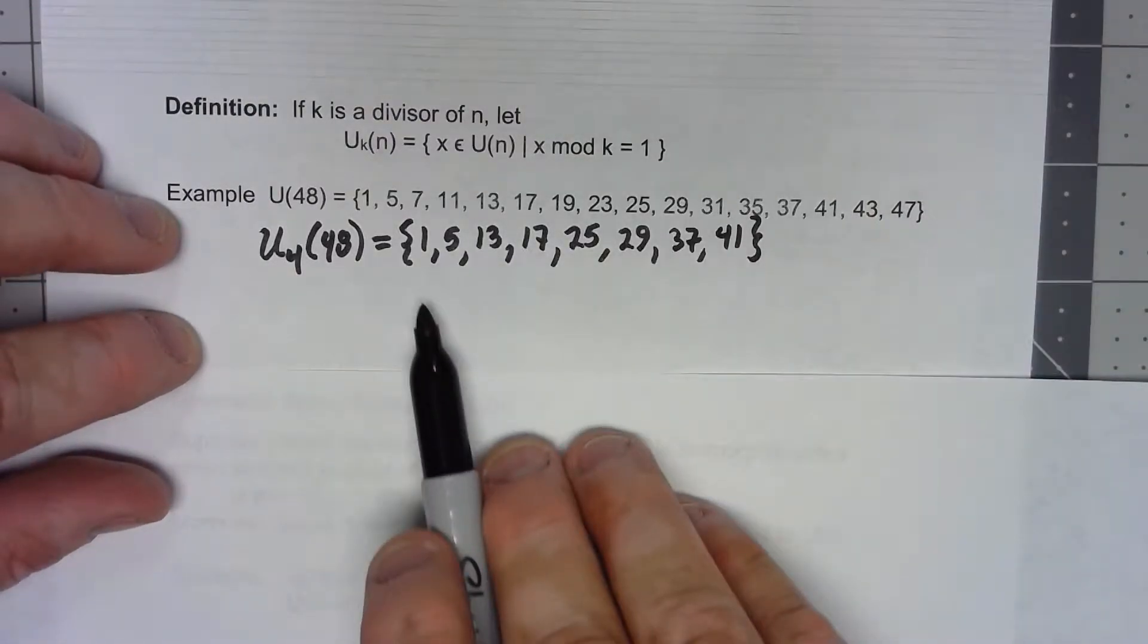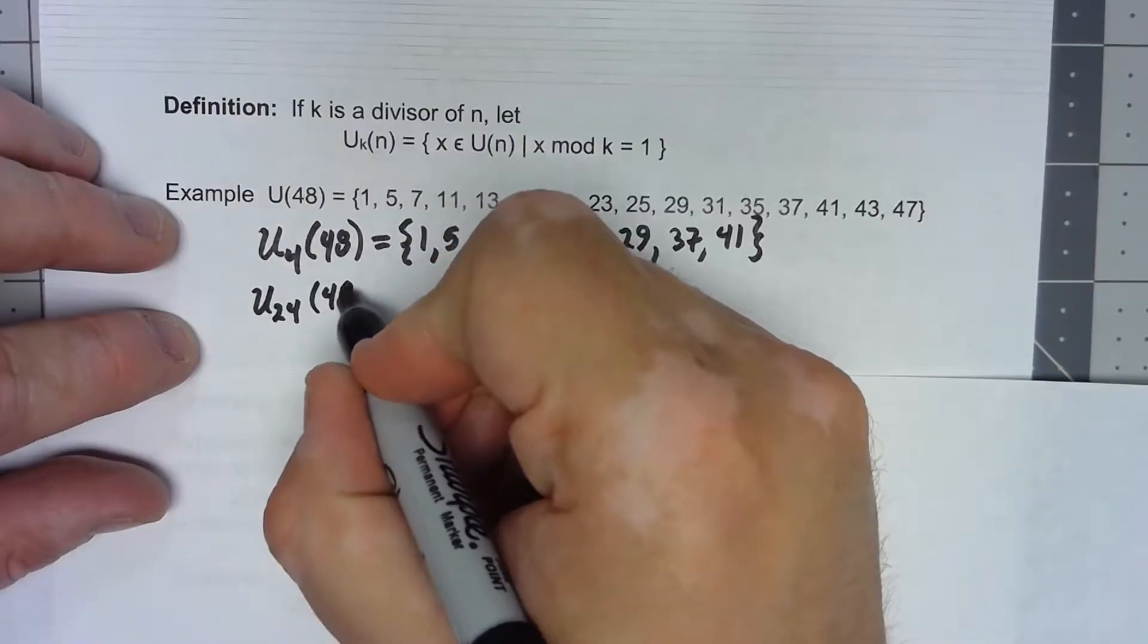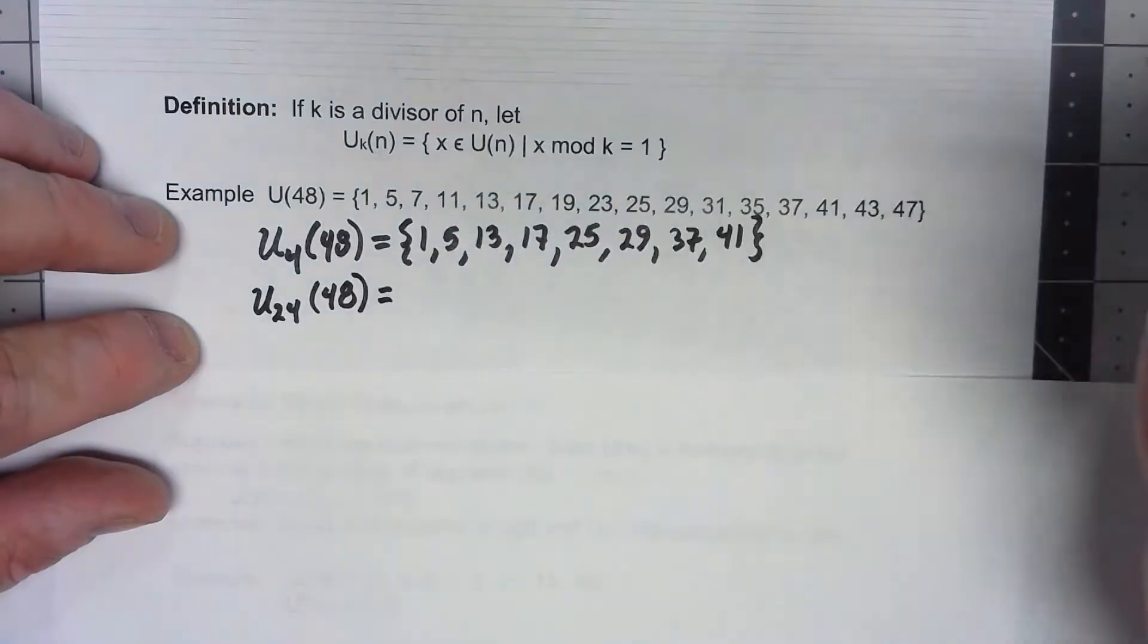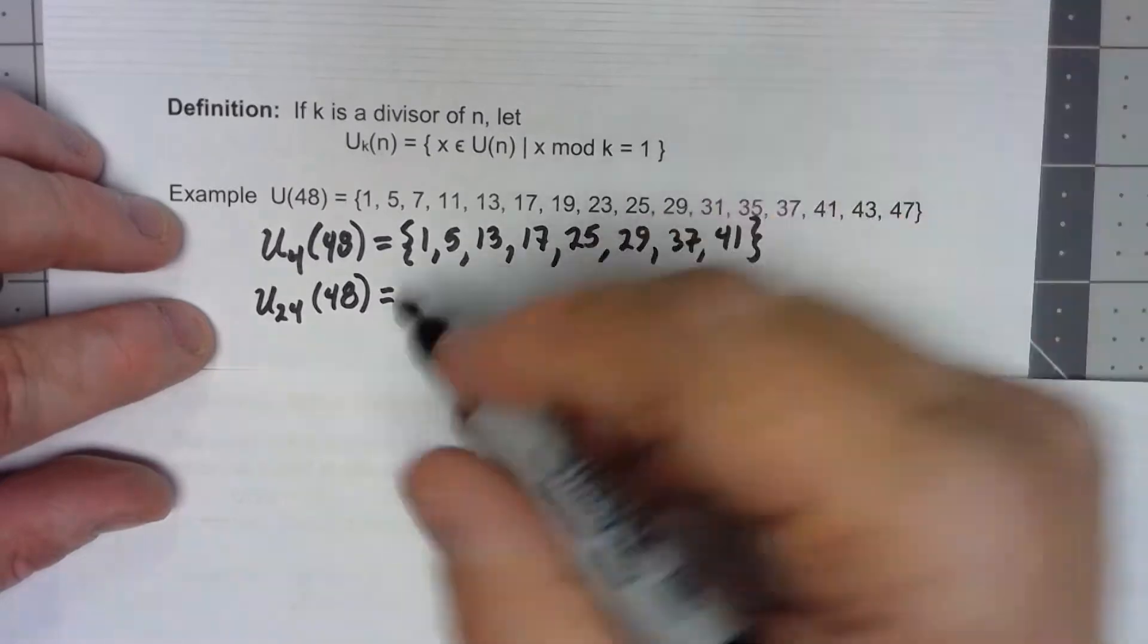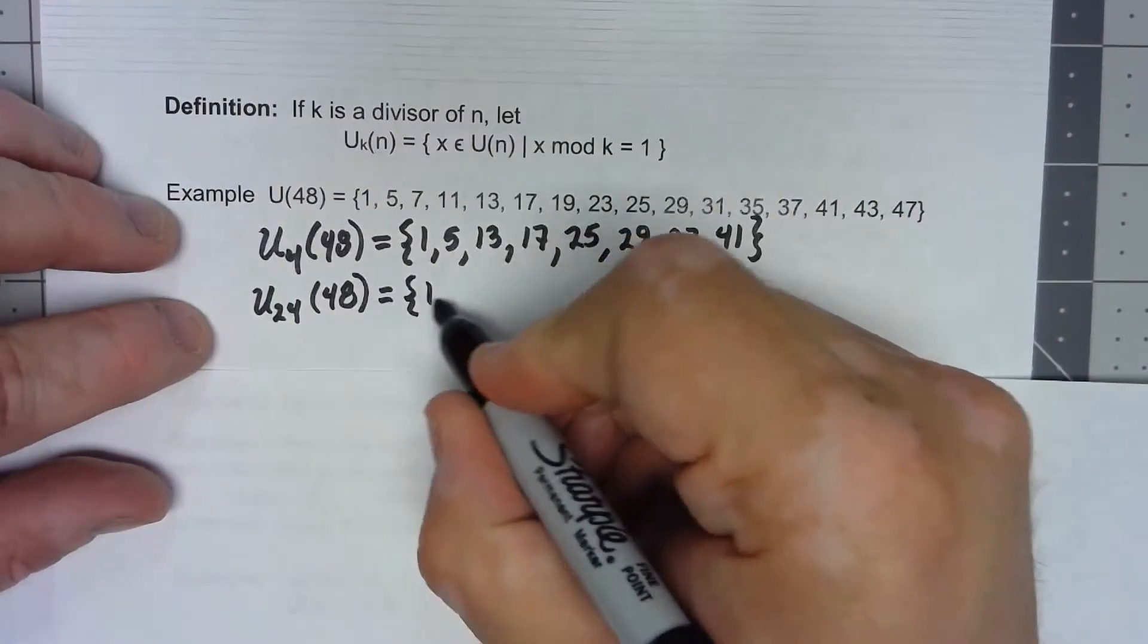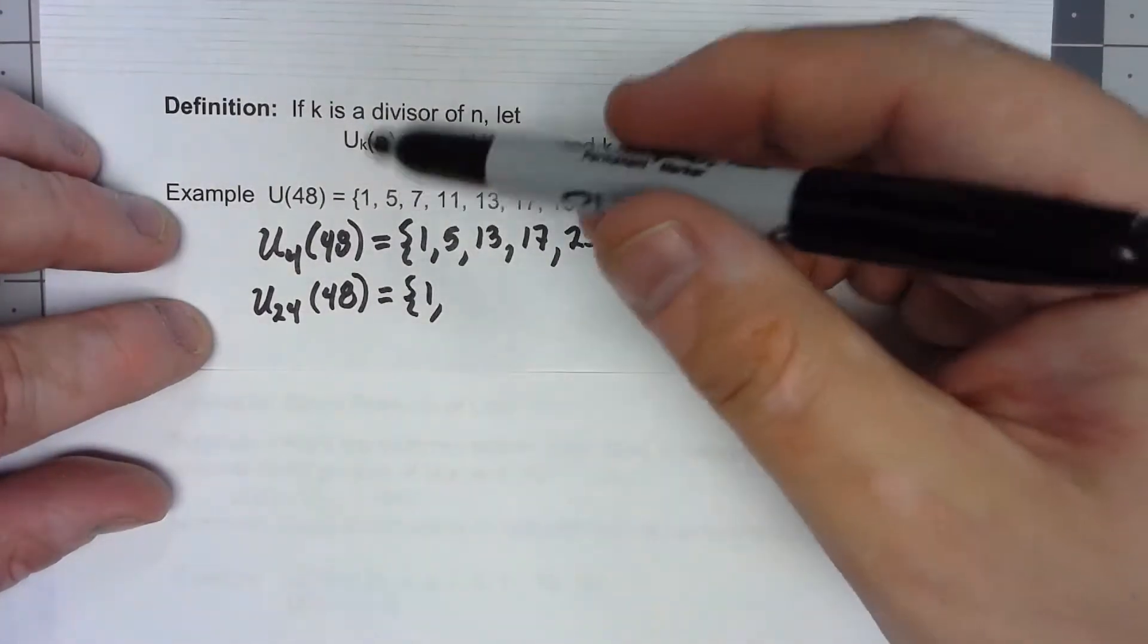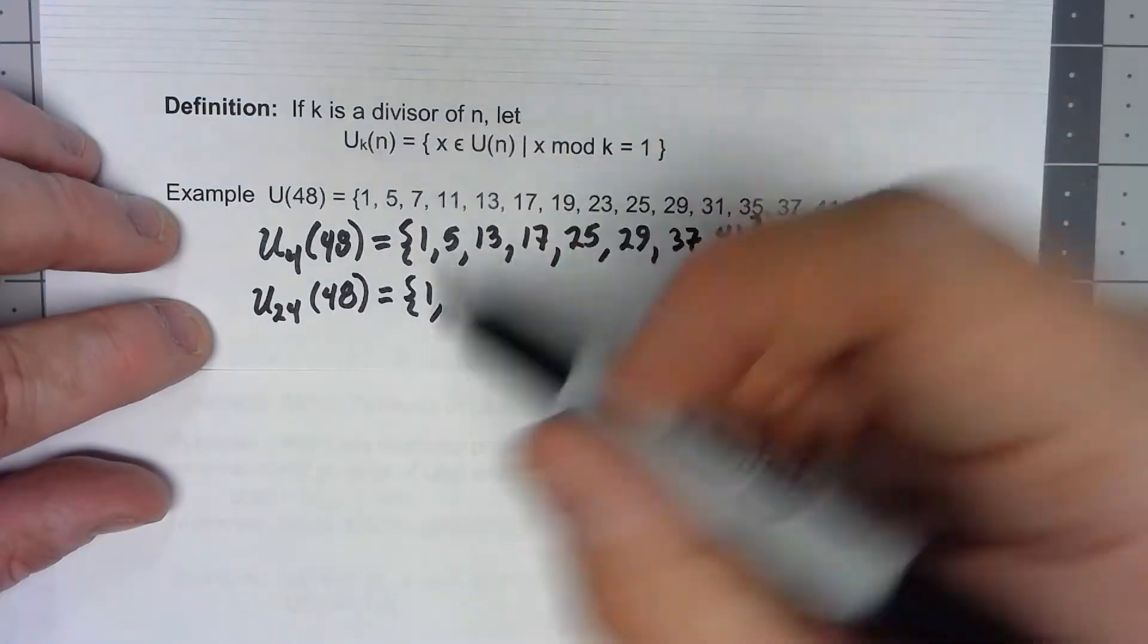Okay let's try another one like U_24. So we're looking for all the things that when we take the mod 24 we get 1. Certainly 1 is, nothing until we get to 25 and honestly that's going to be it.